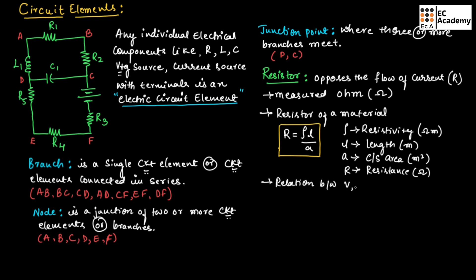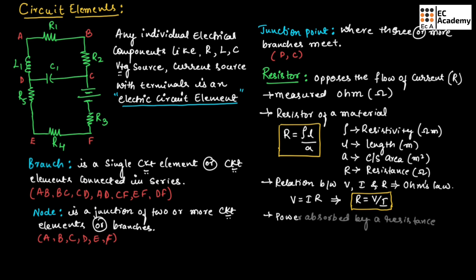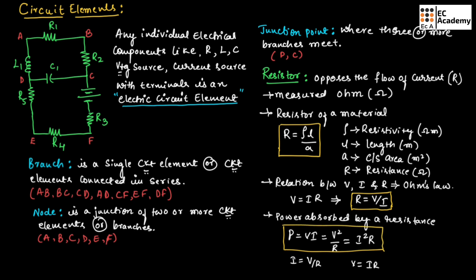There is a relation between voltage, current, and resistance that can be written using Ohm's law: V equals IR. From this we can write R equals V by I. The power absorbed by the resistance can be given as P equals VI, which can also be written as V squared by R, or equivalently I squared R. Power is always measured in terms of watts.